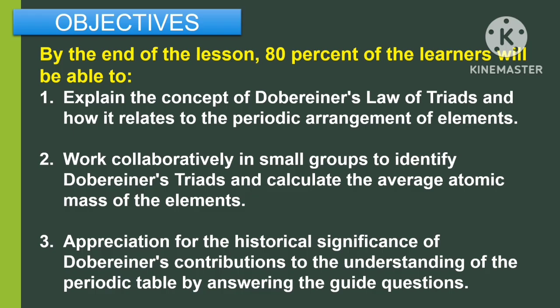For the objectives, by the end of the lesson, 80% of the learners will be able to: first, explain the concept of Dobereiner's Law of Triads and how it relates to the periodic arrangement of elements; second, work collaboratively in small groups to identify Dobereiner's triads and calculate the average atomic mass of the elements; and third, show appreciation for the historical significance of Dobereiner's contribution to the understanding of the periodic table by answering the guide questions.